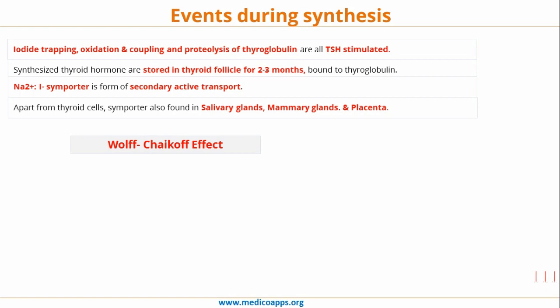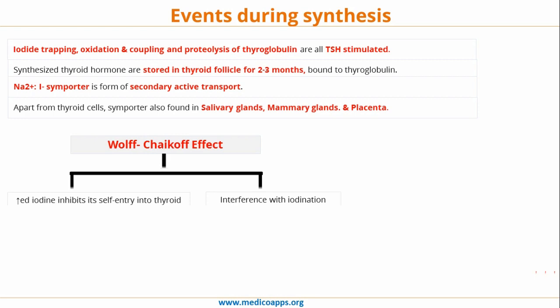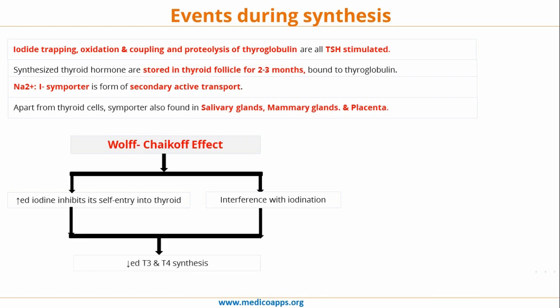There is also an important effect called the Wolff-Chaikoff effect, in which an increase in iodine concentration inhibits the entry of additional iodine into the thyroid and also interferes with the iodination process, leading to a decrease in T3 and T4 synthesis. So in summary, the Wolff-Chaikoff effect means that an increase in iodine level decreases both iodine entry and iodination, thereby reducing T3 and T4 synthesis.